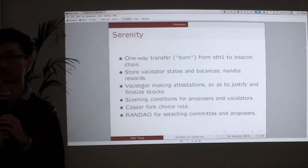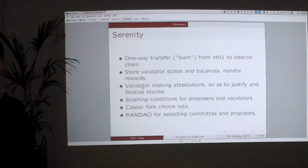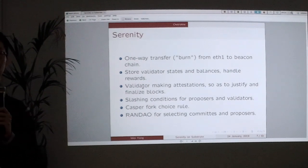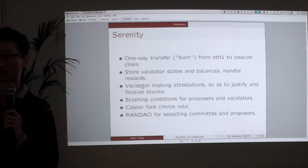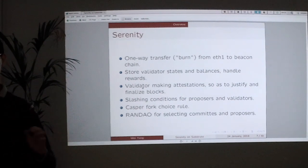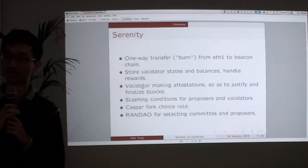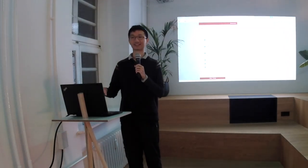We also have the Casper fork choice rule. Casper's actual definition doesn't really touch the proposer layer, but we need a way to make proposers. Currently we have the RANDAO algorithm to do that, which uses a random function that allows you to choose the proposer on the chain. There are some security vulnerabilities for randomness management and there are also solutions, but right now we are not going to implement them — the spec is not yet finalized. From what I understand, right now we are just using a new blockchain RANDAO to select proposers.